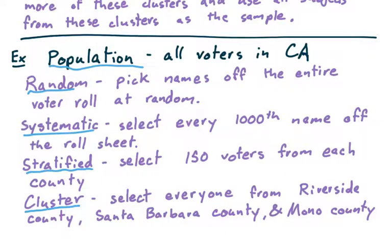A systematic sample: we would take that same roll sheet and select, let's say for example, every 1,000th name off the roll sheet. That would be a systematic sample because we're choosing the specific counting number and taking every one of that from our population.